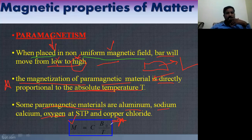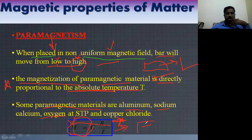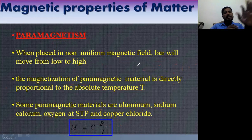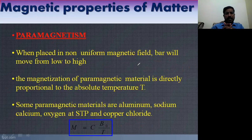For ferromagnetic material, magnetization is inversely proportional, whereas for paramagnetic it is directly proportional to temperature. When you place paramagnetic material in a uniform magnetic field, they attract from low to high magnetic field, and magnetization is directly proportional to temperature.